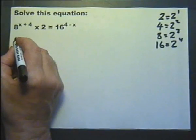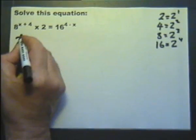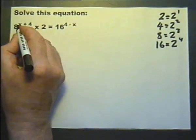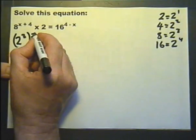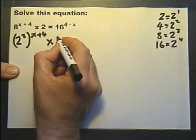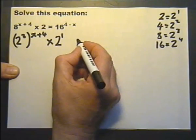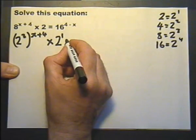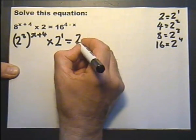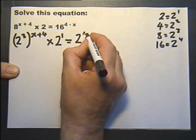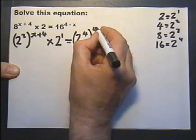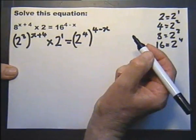Instead of 8, we're going to write 2 to the power of 3, raised to the power of x plus 4, multiplied by 2 — I'm going to write 2 to the power of 1 — equals 16. So instead of 16 we're going to write 2 to the power of 4, which is then raised to the power of 4 minus x.